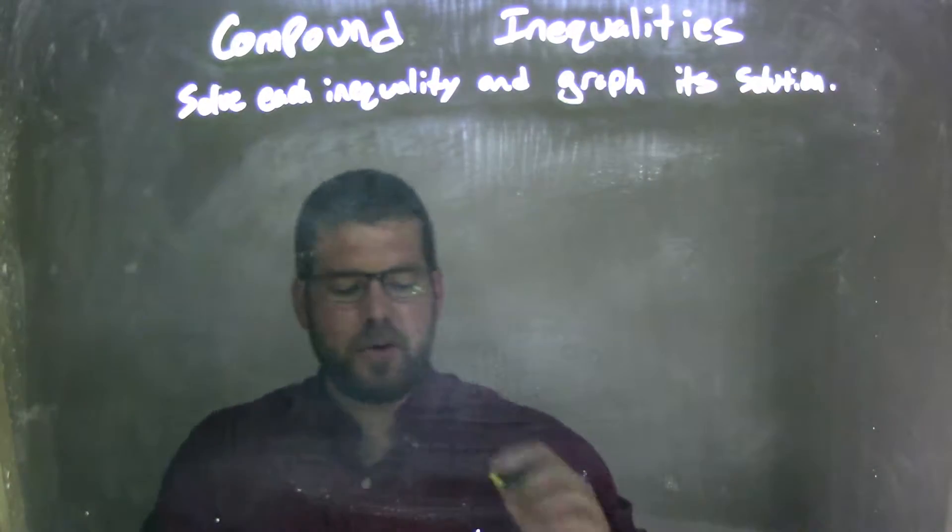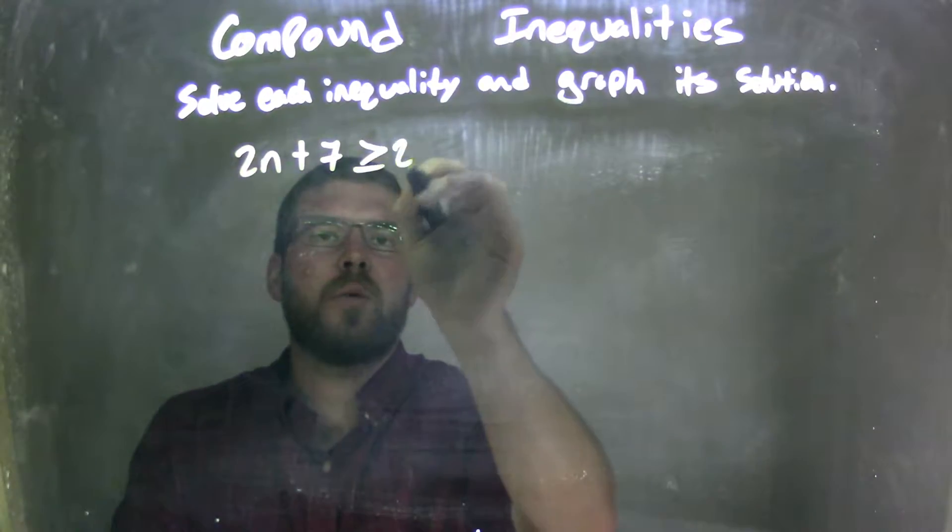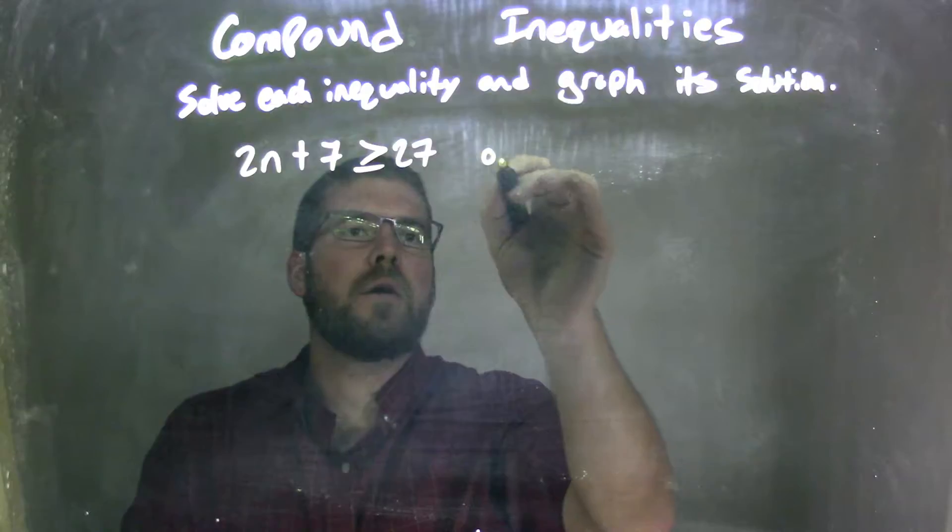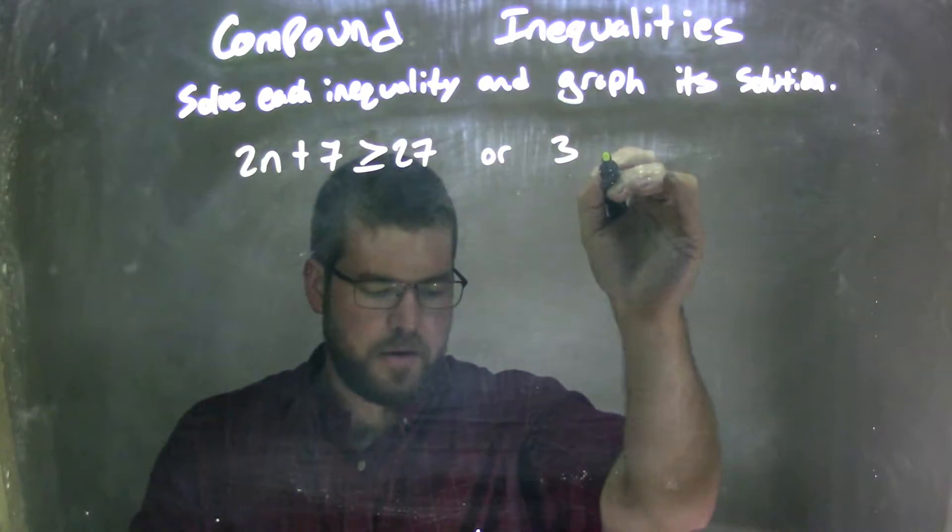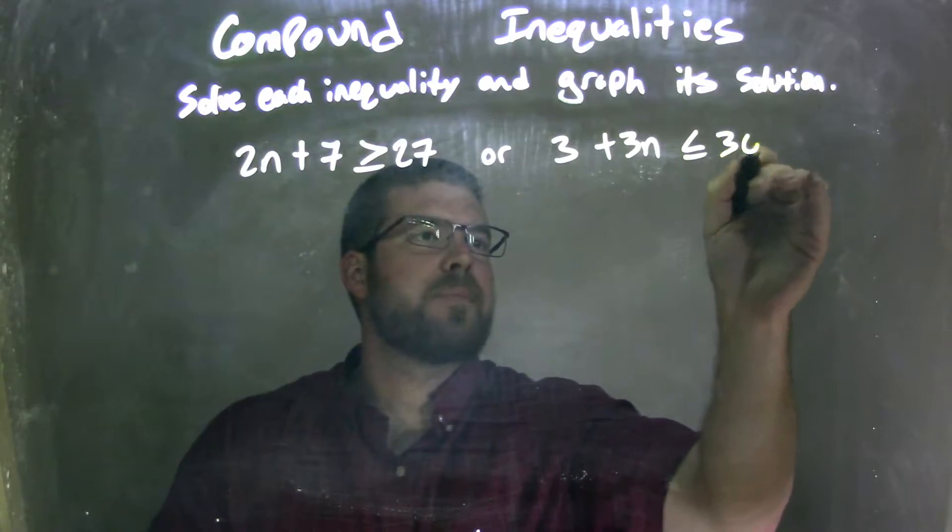So if I was given this inequality, 2n plus 7 is greater than or equal to 27, or 3 plus 3n is less than or equal to 30, okay?